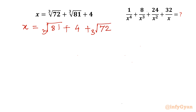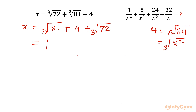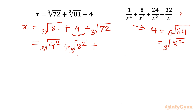Now I can write 4 as cube root of 64, since 64 is 4 cubed — cube root and cube cancel, so cube root of 64 is 4. Further, we can consider 64 as 8 squared, so inside the cube root it is 8 squared. Also, cube root of 72 can be written as cube root of 9 times 8. So in place of 4 I write cube root of 8 squared, and cube root of 72 becomes cube root of 9 times 8.